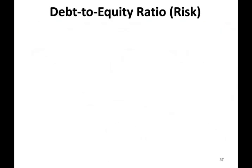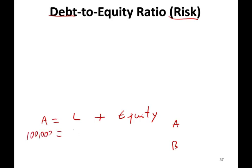So let's take a look at the first topic for today, which is the debt to equity ratio. Every time you hear the word debt, it means risk. Let's think from the accounting equation perspective. We have assets equal to liabilities plus equity. Let's assume we have two different companies — company A and company B. Company A has $100,000 in assets, liabilities of $20,000, and equity of $80,000.